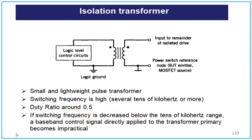For isolation using a transformer, the isolation transformer acts as a protective circuit — it is small and lightweight. The switching frequency is high, and the duty ratio is around 0.5. If the switching frequency decreases below the tens of kilohertz range, a baseband control signal directly applied to the transformer primary becomes impractical. The logic level control circuit signal is given to the isolation transformer, which in turn is input to the isolated drive circuit.